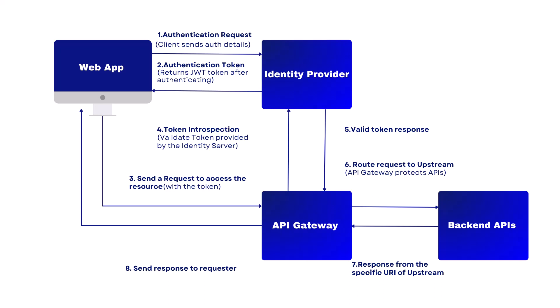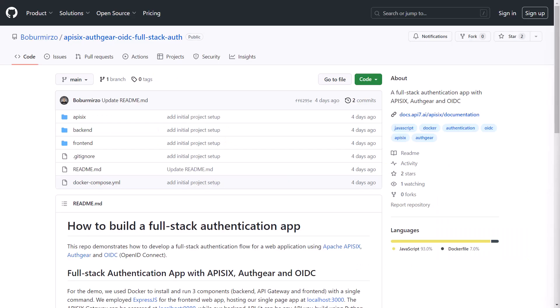If API6 cannot locally validate the token, it sends a token introspection request to the authorization server's introspection endpoint. The server checks its records to determine token validity, expiration, and associated scopes. After checking the token state, it responds to API6. Based on the response, API6 makes an informed decision: if the token is valid it forwards the request to the back-end API, otherwise it rejects the client's request with an unauthorized HTTP status code.